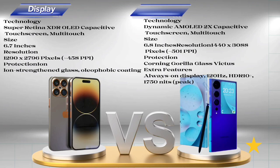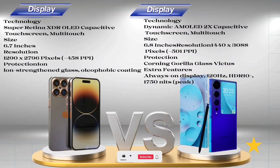Samsung Galaxy S23 Ultra display: Technology: Dynamic AMOLED 2X, capacitive touchscreen, Multi-Touch. Size: 6.8 inches. Resolution: 1440 x 3088 pixels, ~501 PPI. Protection: Corning Gorilla Glass Victus. Extra features: Always-on display, 120 Hz, HDR10+, 1750 nits peak brightness.